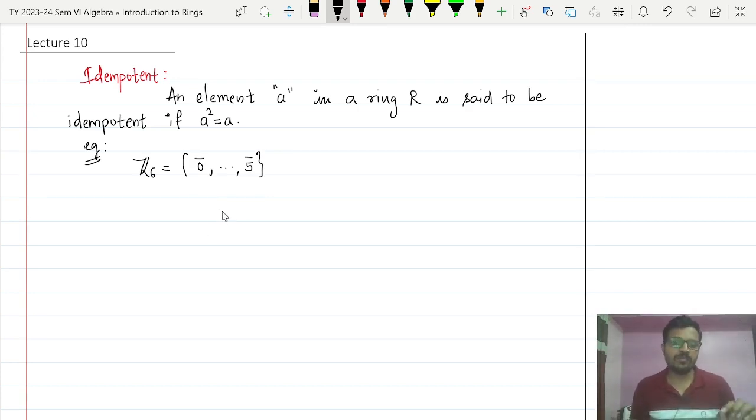We have to find the square of each element, and if it comes out to be itself, then we call that element idempotent. For example, what is 0 bar square? It is 0 bar. What about 1 bar square? Remember the operation is multiplication, so it is 1 bar.